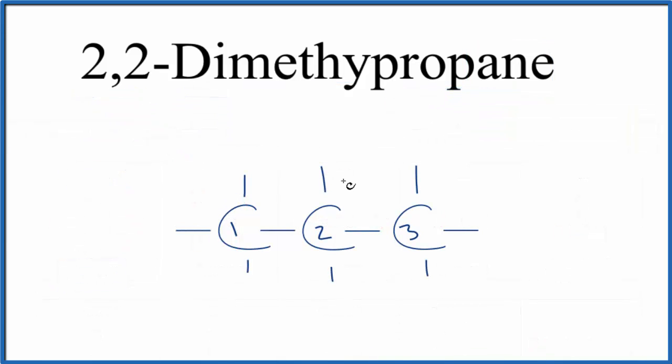At this point, we have three carbons bonded together surrounded by hydrogens. All single bonds, that's propane. But this is 2,2-dimethylpropane we're trying to write the structure for.